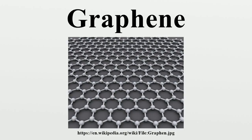Starting in the 1970s, single layers of graphite were grown epitaxially on top of other materials. This epitaxial graphene consists of a single atom thick hexagonal lattice of sp2-bonded carbon atoms, as in freestanding graphene. However, there is significant charge transfer from the substrate to the epitaxial graphene, and in some cases hybridization between the d-orbitals of the substrate atoms and pi-orbitals of graphene, which significantly alters the electronic structure of epitaxial graphene.